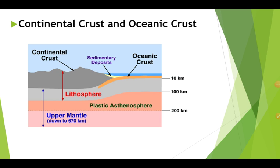Where are the thick sedimentary deposits found? The thickest accumulations of sediment in the world are in the oceans. All but 8% of the world's sediment is in the ocean, in piles up to 9 km thick. The thickest accumulations are on the continental slope and rise.